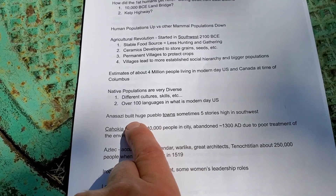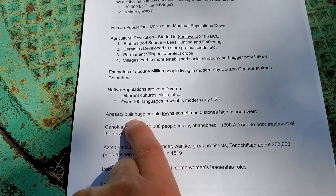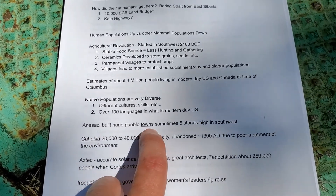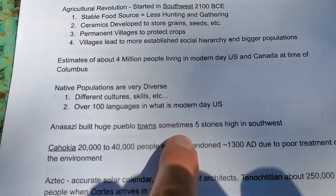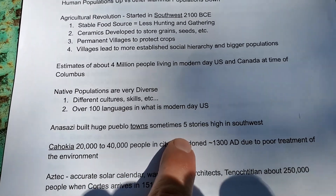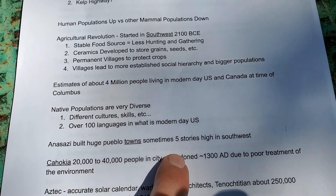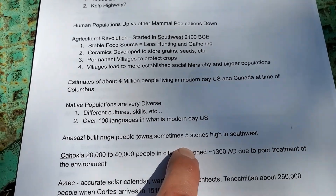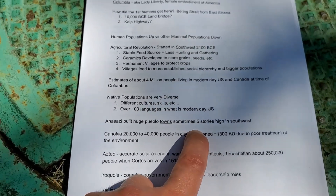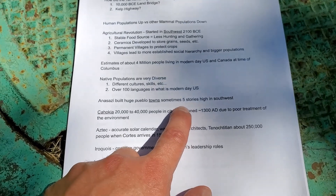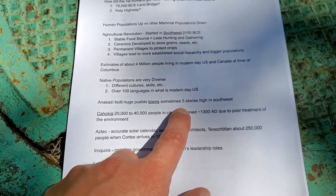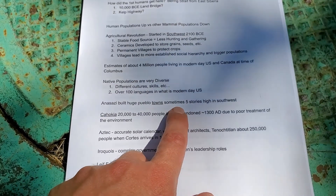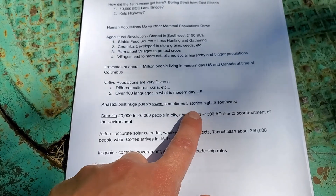To give some examples: the Anasazi in the southwest built huge pueblo towns, sometimes five stories high. They built these towns into the sides of canyons alongside rivers, and could pull up their ladders and retreat to higher stories if attacked.